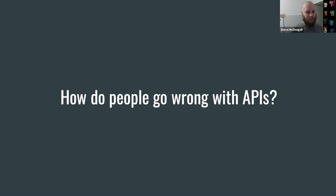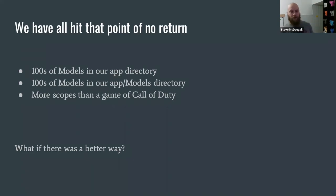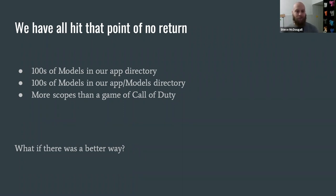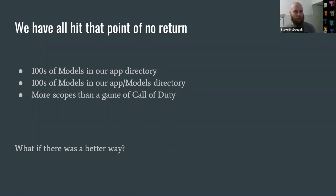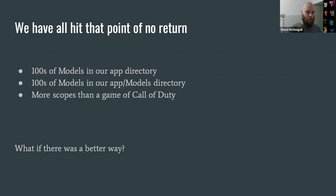You can design the API around a specific use case and test it out properly. With Laravel, a lot of us have hit that point of no return where we've got hundreds of models in our app directory. Really all you're doing at that point is shifting the blame into a different namespace, sub-namespacing it somewhere under models. You end up with this massive tree of models and you don't know what to do with them. As I like to say, it's got more scopes than a game of Call of Duty. A scope in Laravel is just a way to build up a query — a where clause or a relationship — it's just part of the query builder.